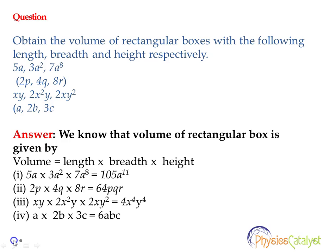The last one: a into 2b into 3c. Let's first of all segregate the numeric terms. The numeric terms are 1, 2, 3 — multiplication would be 6. The variable terms are a, b, c — the multiplication would be abc.